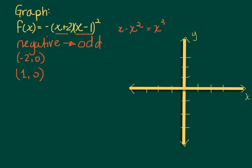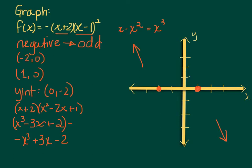So I'm going to plot what I know. I know I have a root at negative 2. I have a double root at 1. I know it's a negative odd, which means it's going to end going down here and going up here. I know I have a y-intercept, so I'm going to foil that out to find what my y-intercept is.